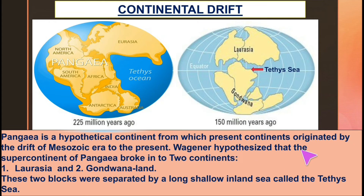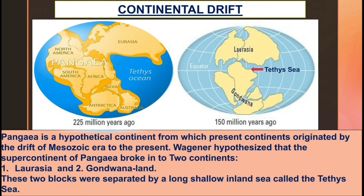Wegener hypothesized that the supercontinent of Pangaea broke into two continents: Laurasia on the north side and Gondwana on the south side. These two blocks were separated by a long shallow inland sea called Tethys.